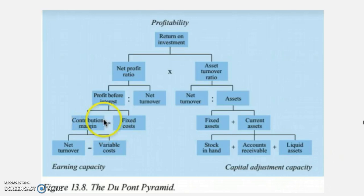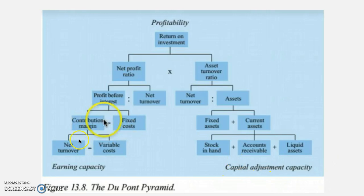We will start off with the DuPont pyramid. The DuPont pyramid shows the net profit ratio, the asset turnover ratio, and the return on investment. This is the most central model in business economics for analyzing ratios. Here we are introduced to firstly earning capacity and the capital adjustment capacity.